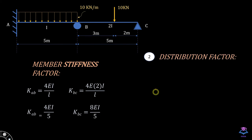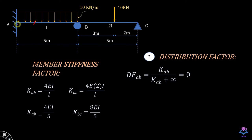Now we calculate the distribution factors. DFAB is equal to K_AB divided by the total stiffness at joint A. The total stiffness at joint A equals K_AB plus the stiffness provided by the fixed support, which is infinity, because the fixed support does not allow any rotation. With infinity in the denominator, DFAB is equal to zero.